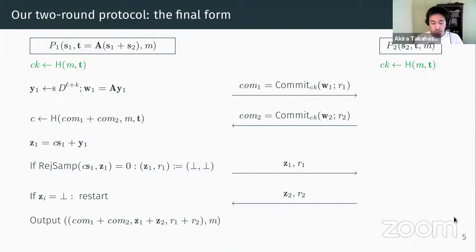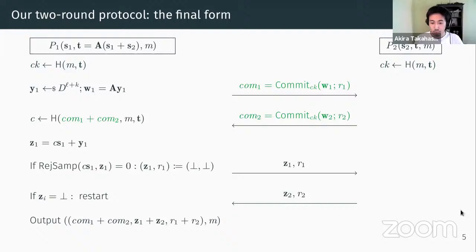Since our resulting construction is very simple, let me quickly go over the protocol. Both parties hold the secret key shares. As a first step, they hash the input message, and it's hashed into the commitment key — this is a critical part. Since we rely on additively homomorphic commitment, we let each party commit to the first message, and we can take the sum of these commitments in a meaningful way. Then after both parties successfully pass the rejection sampling, they output the sum of commitments, response, and commitment randomness.